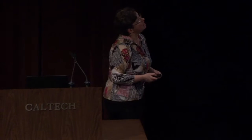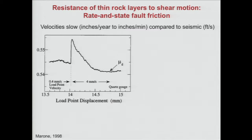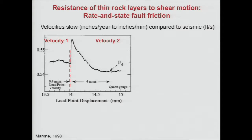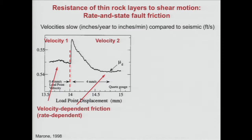Looking at the results, what you measure is the resistance to motion — shown here in a normalized sense as the friction coefficient, which is resistance divided by the compression applied. Values around 0.5 to 0.6 are very typical for many materials. In the experiment, they were moving at one velocity and then abruptly switched to a different velocity. At one velocity you see a semi-steady level of resistance, and at another velocity you see another semi-steady level. So the friction is velocity dependent — sometimes velocity is called rate — and that's what the 'rate' refers to in rate-and-state friction.